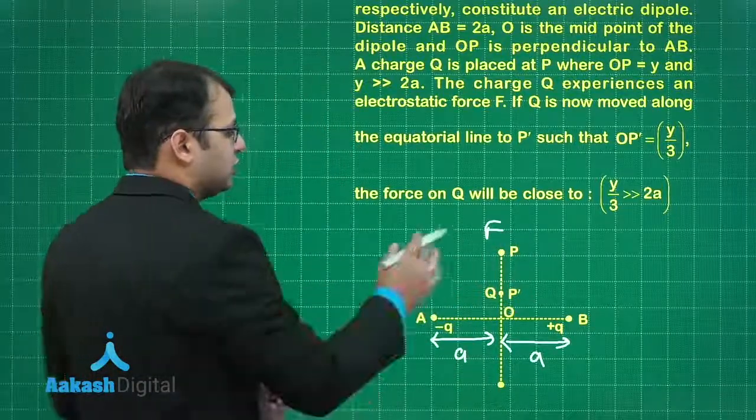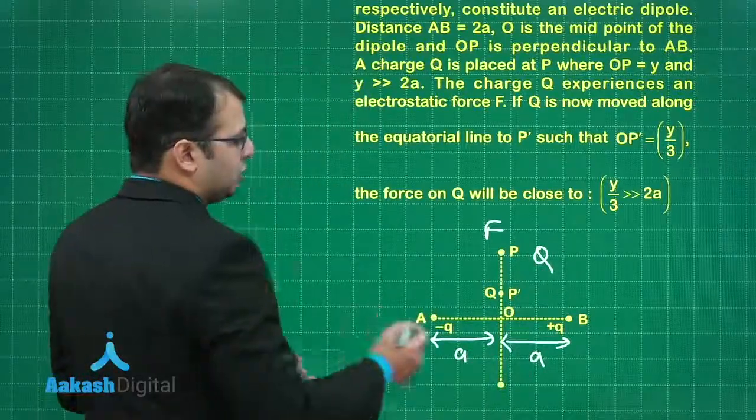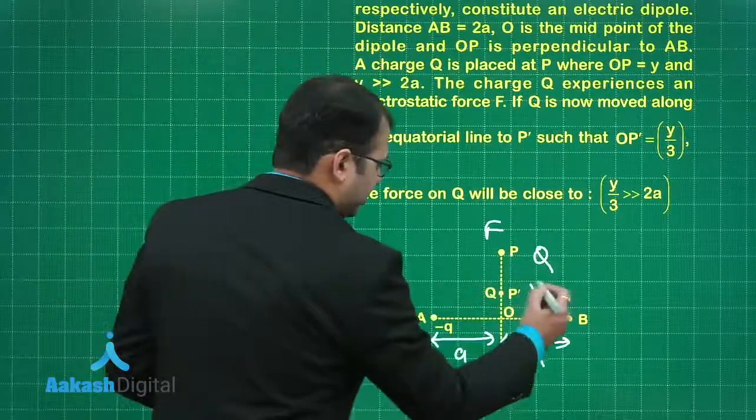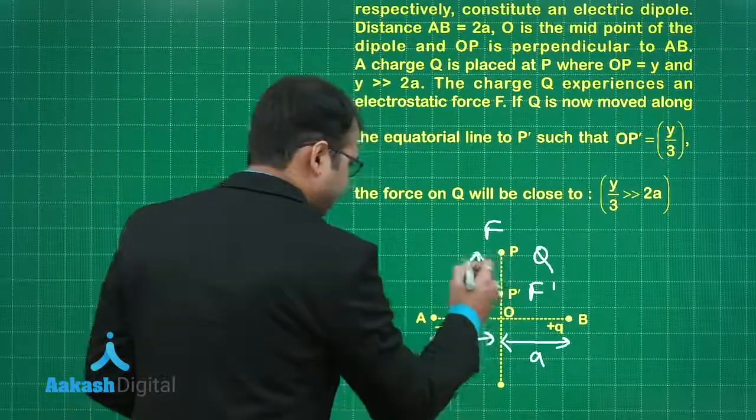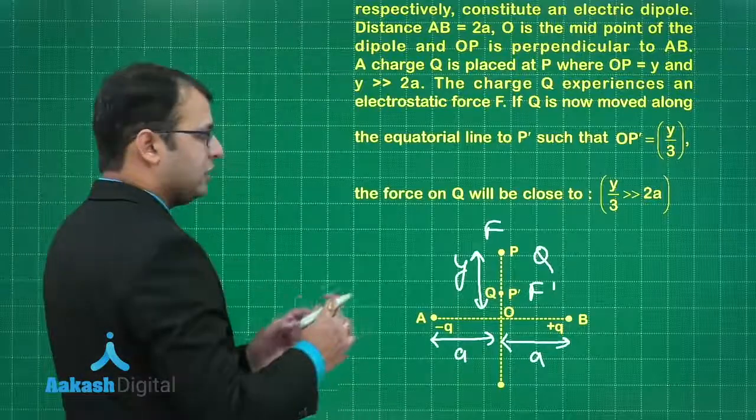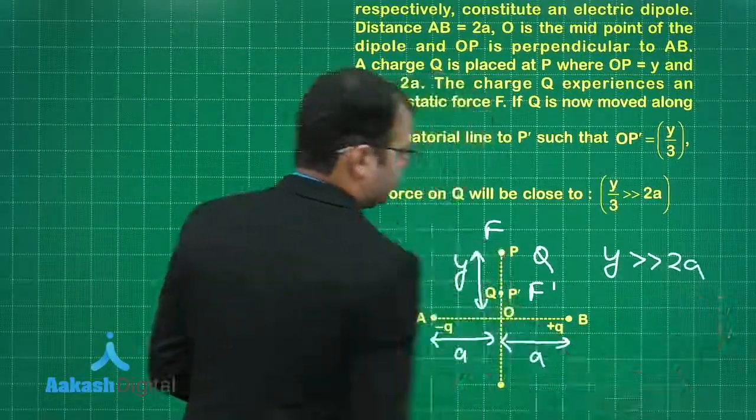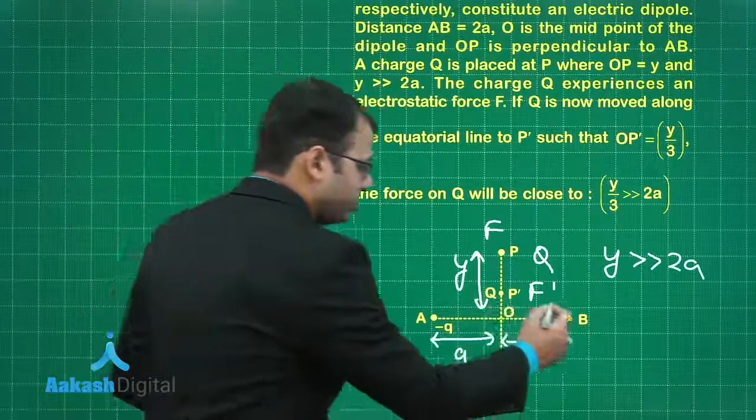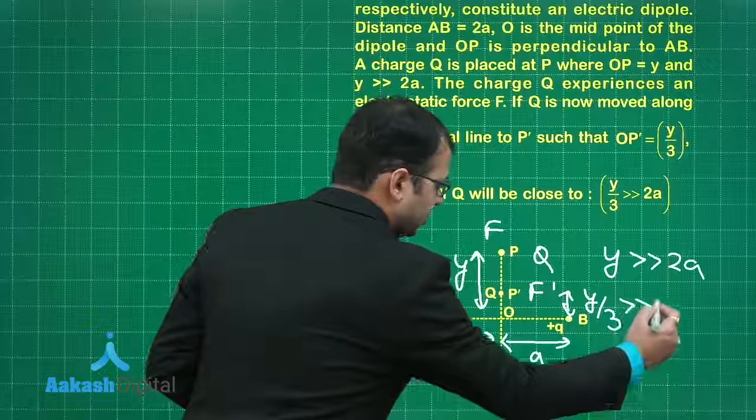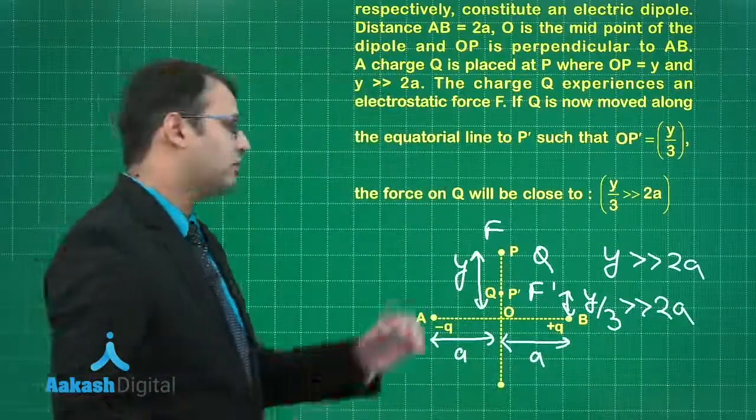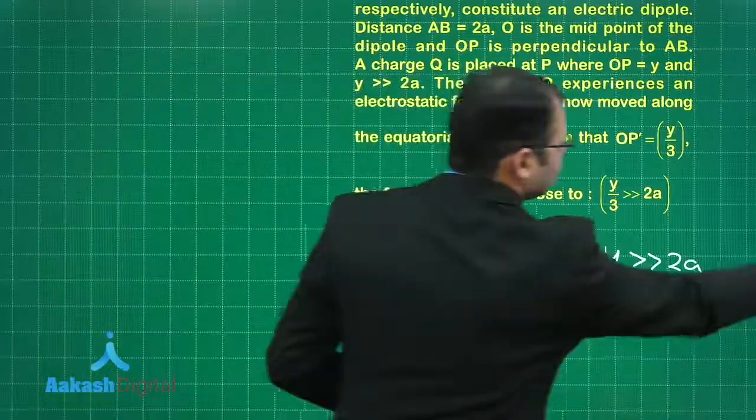Due to this charge system there was some force F exhibited at point P. There was a charge Q and force F was exhibited. Later on this charge was brought to P dash point and the new force was F dash. This distance is Y. At any point of time Y is very very greater than 2A, and this distance new one is Y by 3, also very very greater than 2A. We need to find the value of F dash in terms of F.